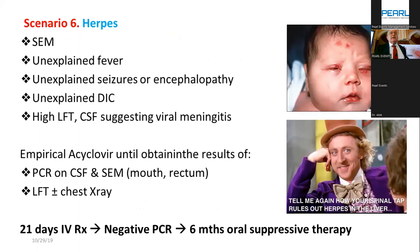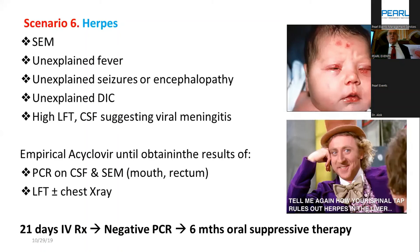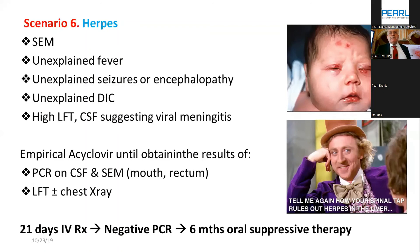Regarding empirical acyclovir: keep the threshold low because acyclovir is much less dangerous than vancomycin, which we give frequently. Indications include any newborn with skin-eye-mucosa lesions, unexplained fever, unexplained seizures or encephalopathy, or unexplained DIC or elevated liver function tests. Do full investigation first, then start empirical acyclovir. Remember: if confirmed herpes, it's 20 days IV, but don't miss the six-month suppressive oral therapy because recurrence is 20–30%. Confirm PCR is negative after IV before starting oral suppression.